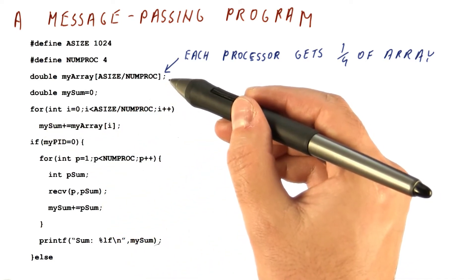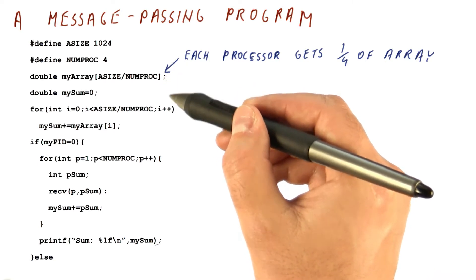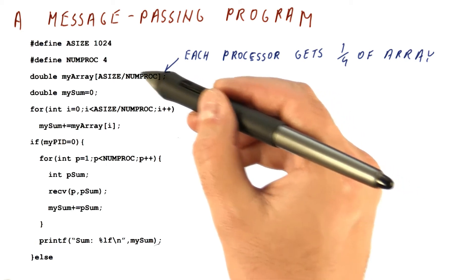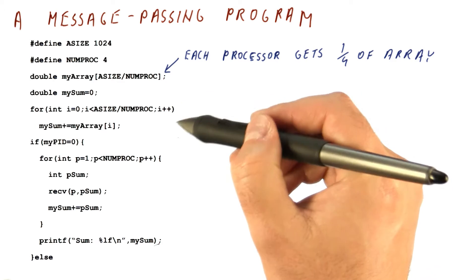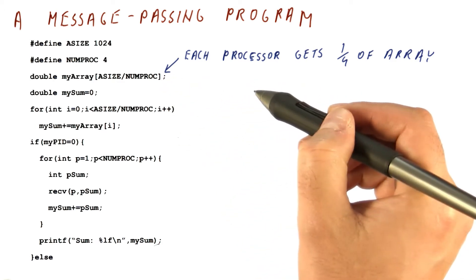This of course assumes that the elements of the large array have somehow been distributed to all of the processors. If they haven't been distributed already, then we need to also write code that will actually send the elements of the array so that each of them gets a quarter of the array.